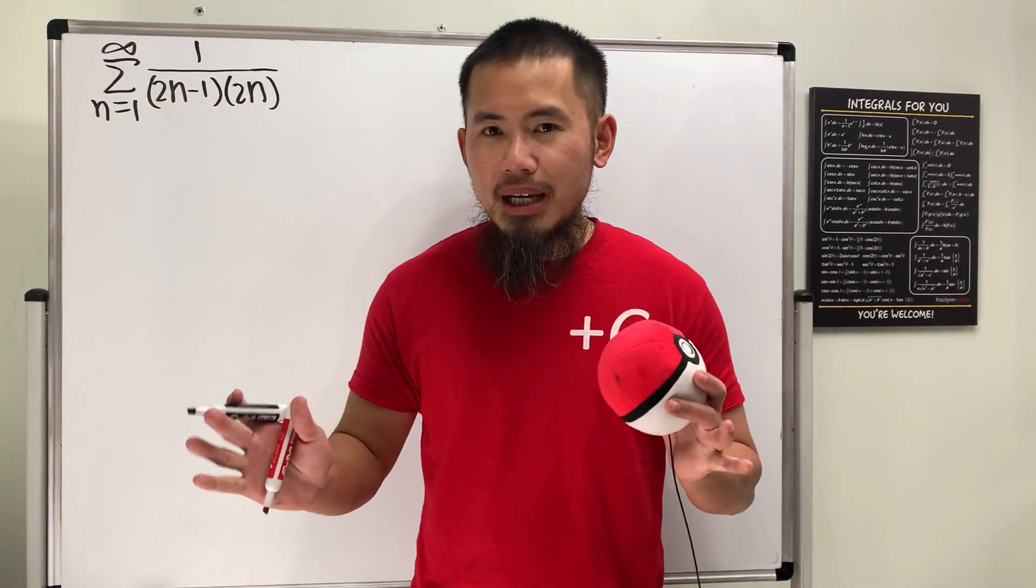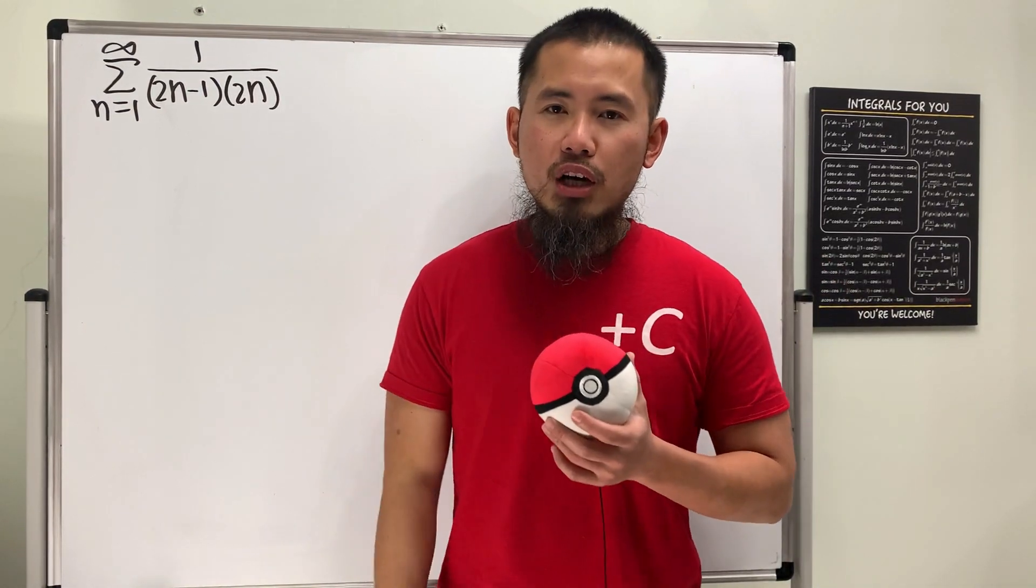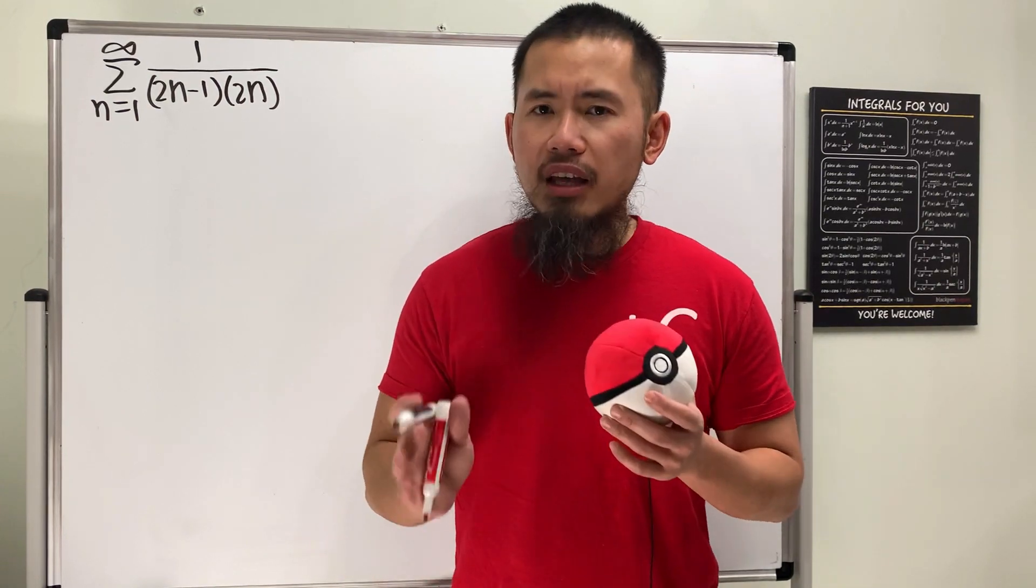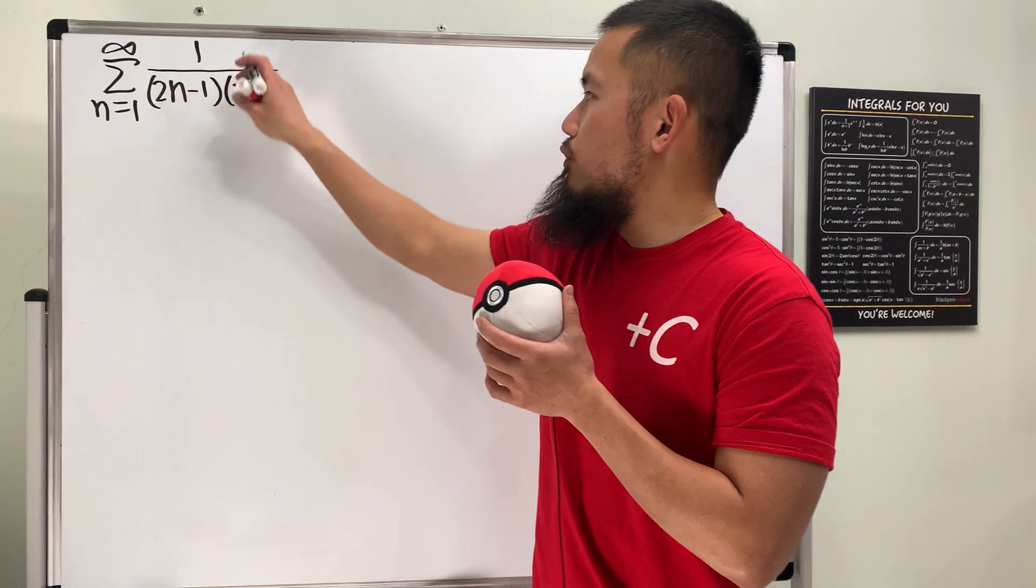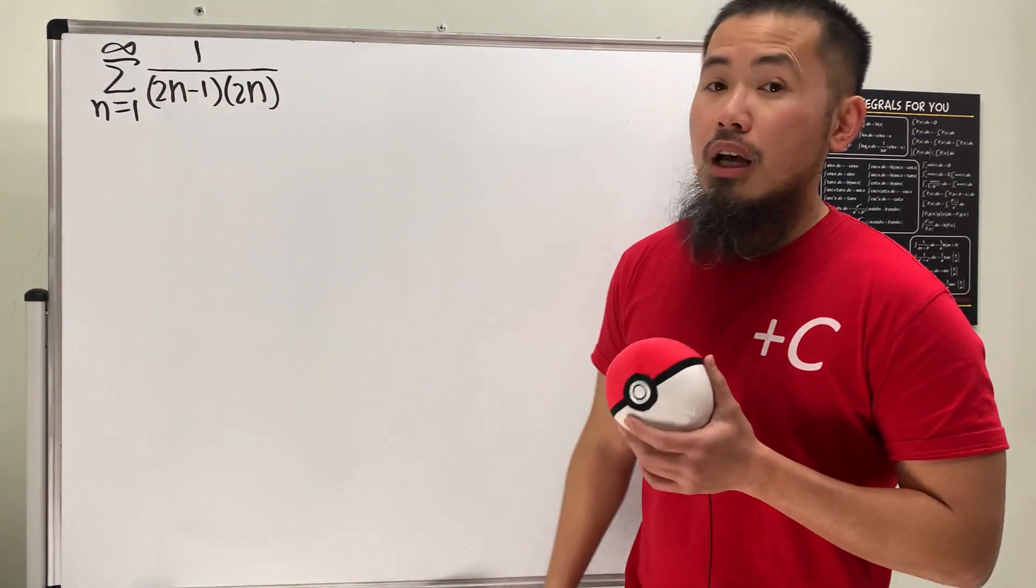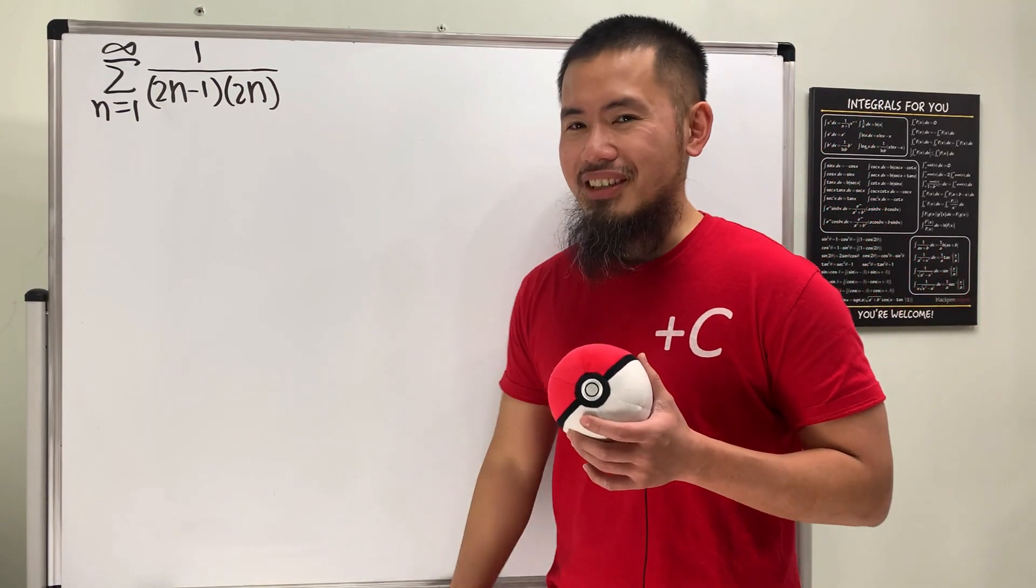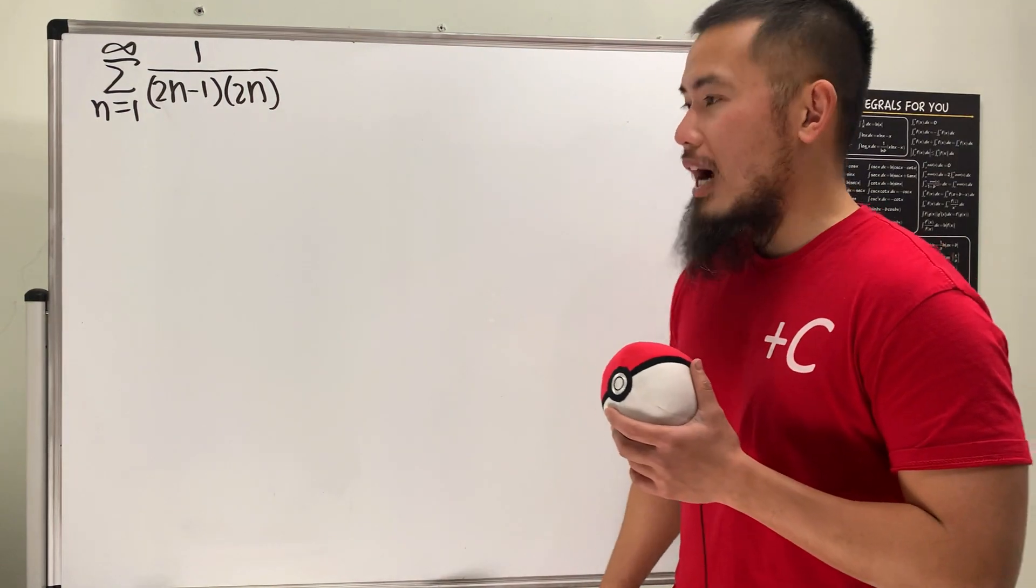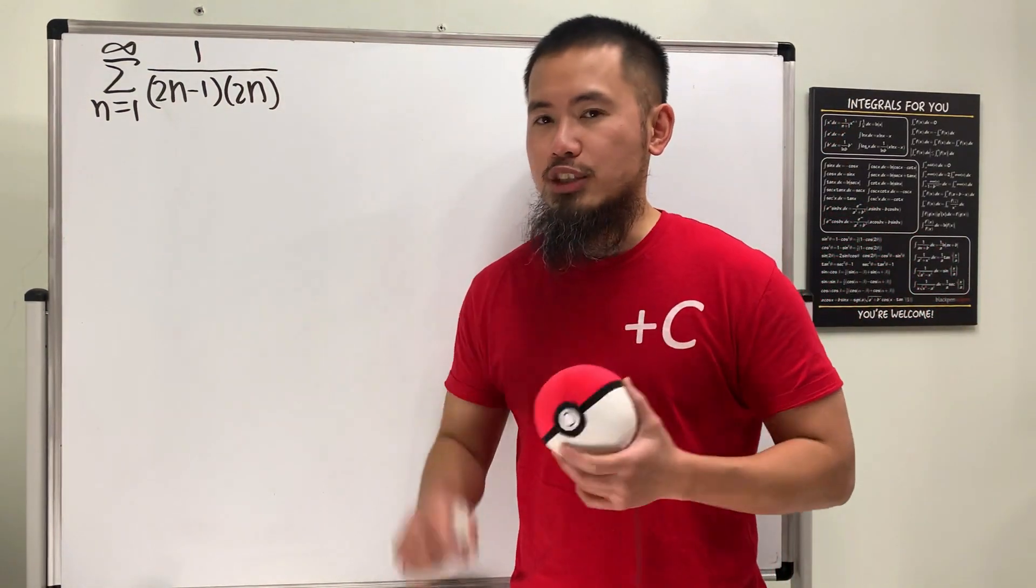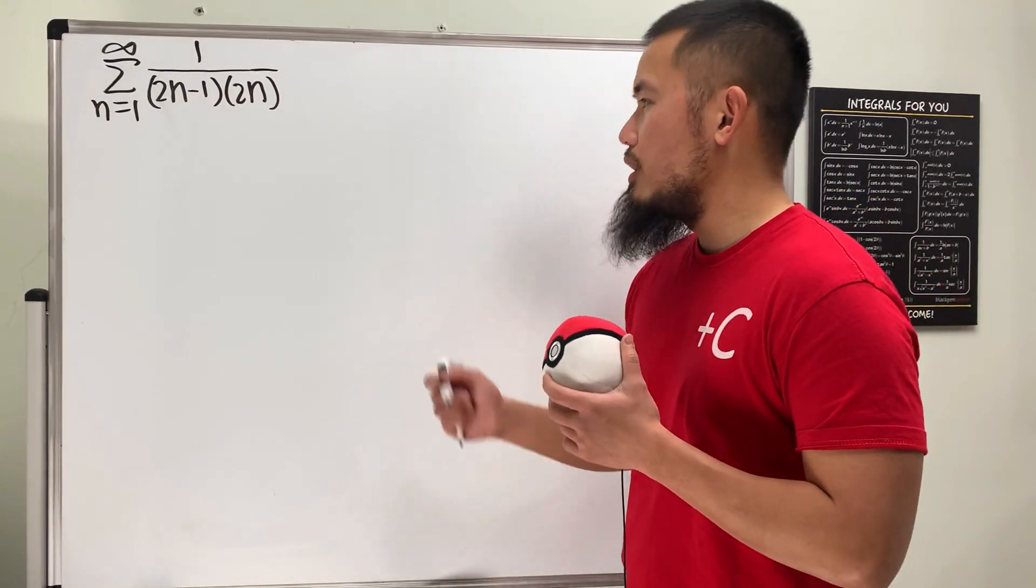Hello ladies and gentlemen, my name is BlackPenRedPen, and first I want to give a big shout out to Dr. Westall Coach for having me on this channel. And today I will show you guys how to calculate the series as n goes from 1 to infinity of 1 over (2n-1) times 2n. I will actually turn this into an integral question, and so just check it out.